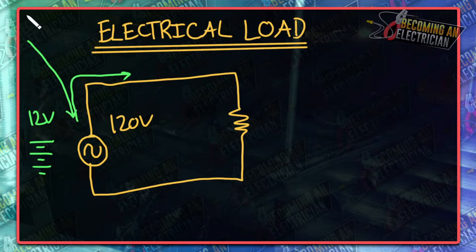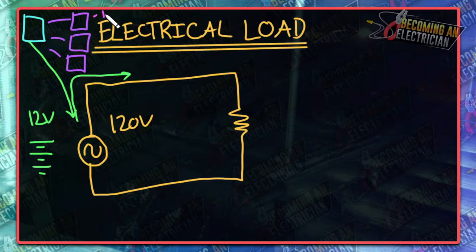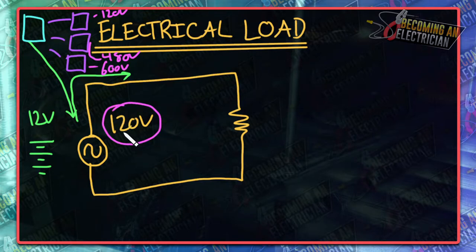This right here is given from the utility company. Now when they provide us power from the transformer, it comes into the building, whether you're in a home or in a commercial setting. The utility company will send you power to your main panel, and then from here you are going to go to different panels depending on what the equipment needs in that building. For example, this one here could be like 120 volts, this one could be 480 volts, and this one could be 600 volts.